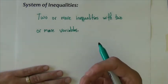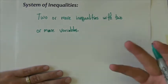In general, in order to have a system you need more than one equation or more than one inequality.